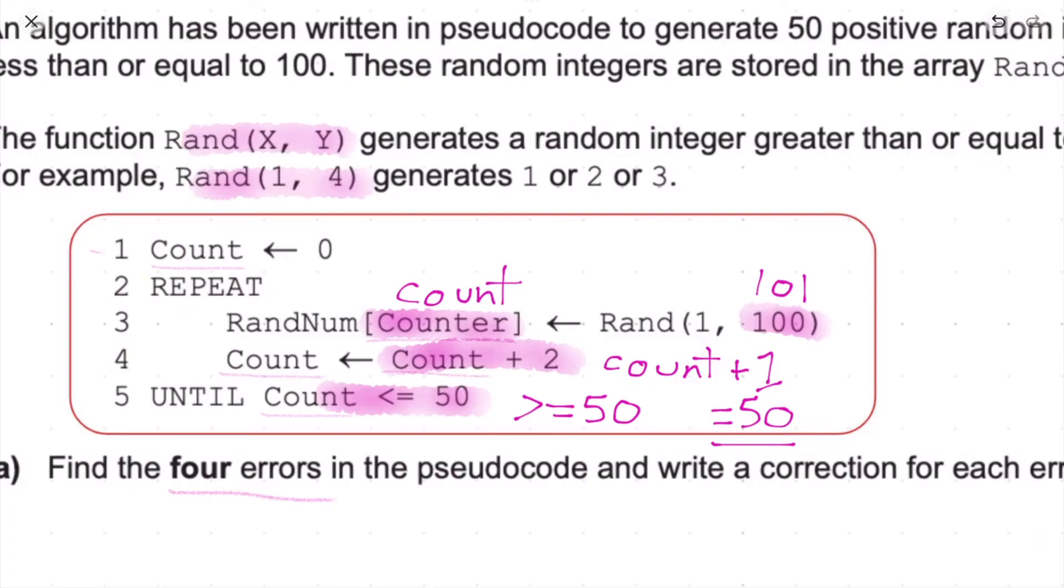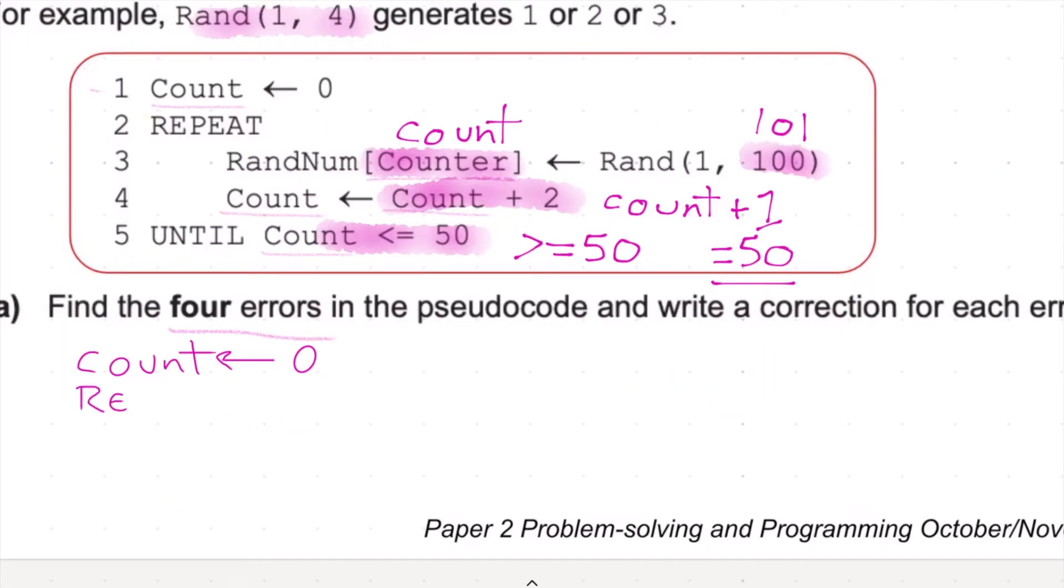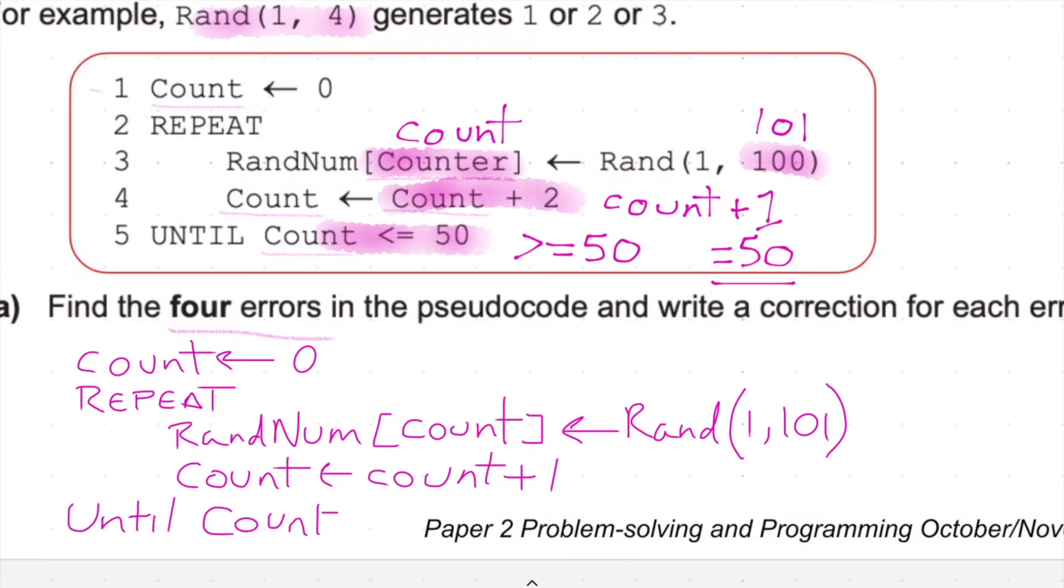So now I would simply write it as count has been assigned 0. Repeat, but then rand num, and we're going to assign that value rand 1, 101. Then we're going to put count in again, count, and assign that count plus 1. And then finally, until equals 50. That's how I would do that one. Sorry, it's a little bit messy, but that is how I would do that algorithm. So we've identified 1, 2, 3, 4 errors, and we've put in alternatives to how we could get it to work. Nice and simple.